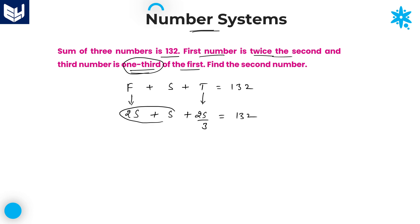Now, adding these: 2s plus s is 3s. So we have 3s plus 2s/3. The LCM is 3, so 3 into 3 is 9, and 9 plus 2 is 11. Therefore, 11s/3 equals 132.